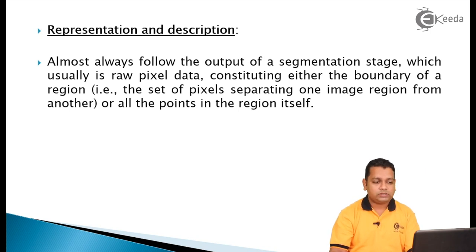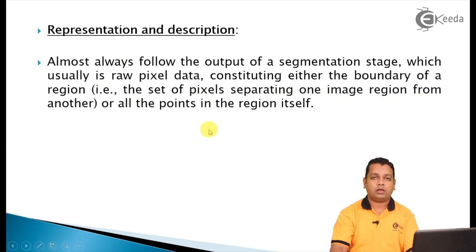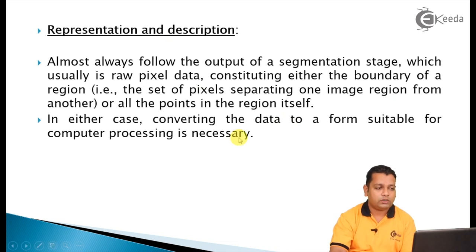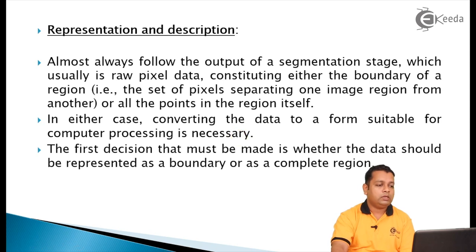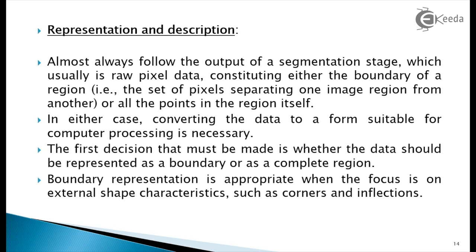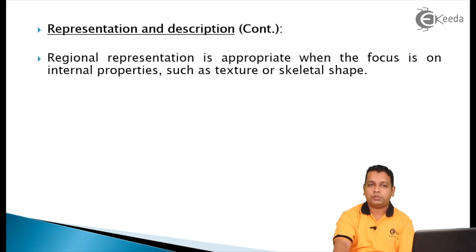The output of image segmentation is usually raw pixel data constituting either the boundary of a region — the set of pixels separating one image region from another — or all points within the region itself. Converting this data to a form suitable for computer processing is the role of representation. The first decision is whether the data should be represented as a boundary or a complete region. Boundary representation is appropriate when the focus is on external shape characteristics such as corners and inflections.